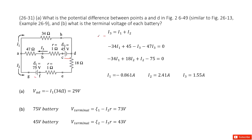Now we consider Kirchhoff's loop rule for the first loop, with current I1 going around. Starting from point A: the current goes through the 34-ohm resistor, giving negative 34·I1. Then it goes through the battery, which is in the same direction as the current, so we add positive 45 volts. Then through the 1-ohm resistor giving minus 1·I3, and through the 47-ohm resistor giving minus 47·I3, all equal to zero.